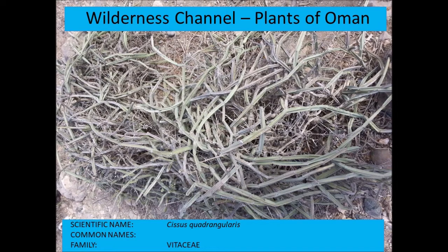Cissus quadrangularis is typically found on top of the escarpment in Dhofar, in rocky areas, producing these cactus-like stems. It's actually from the Vitaceae — the grape family — and is used to treat broken bones. It has tendrils growing from the nodes of the stems, typical of the grape family.